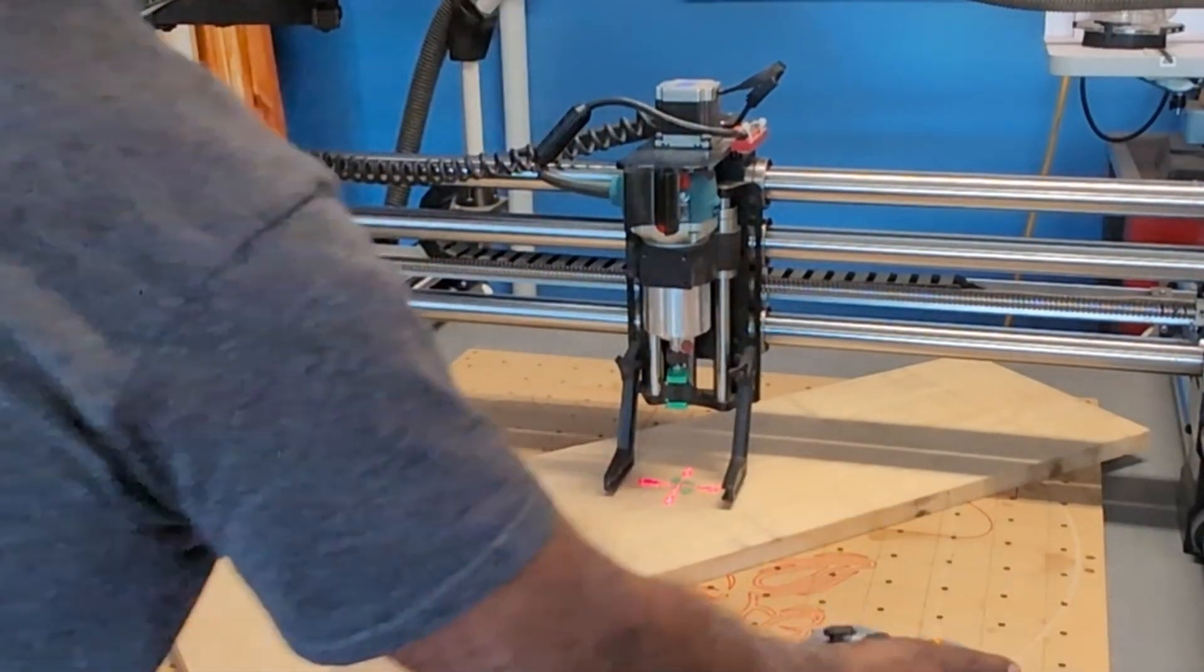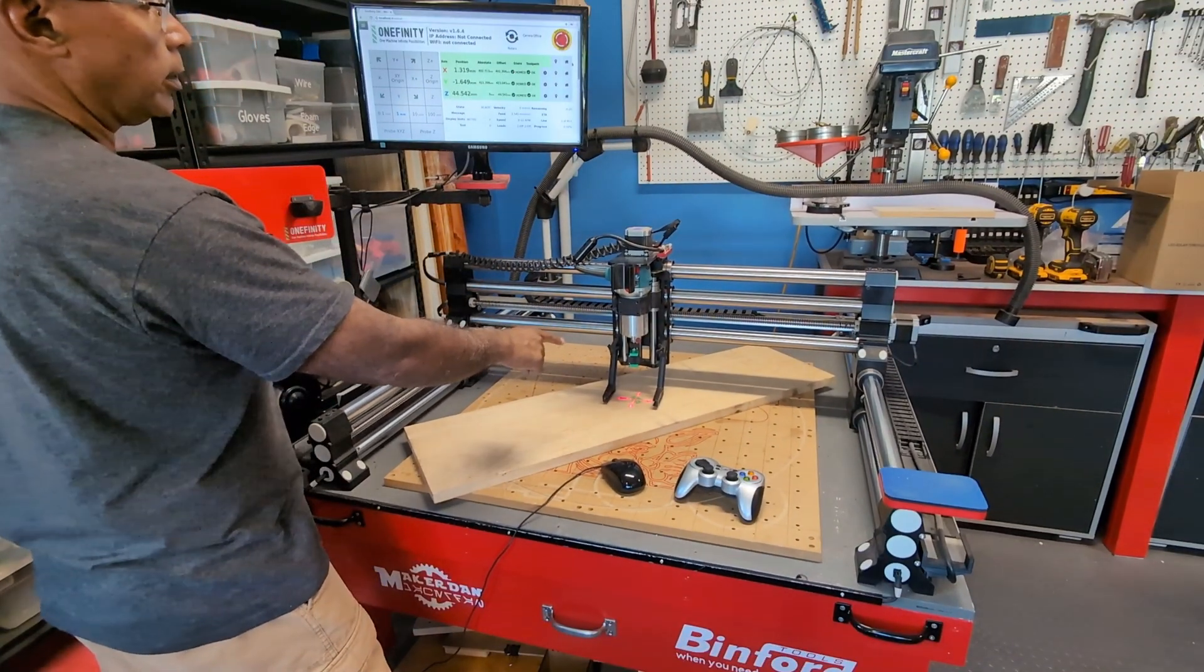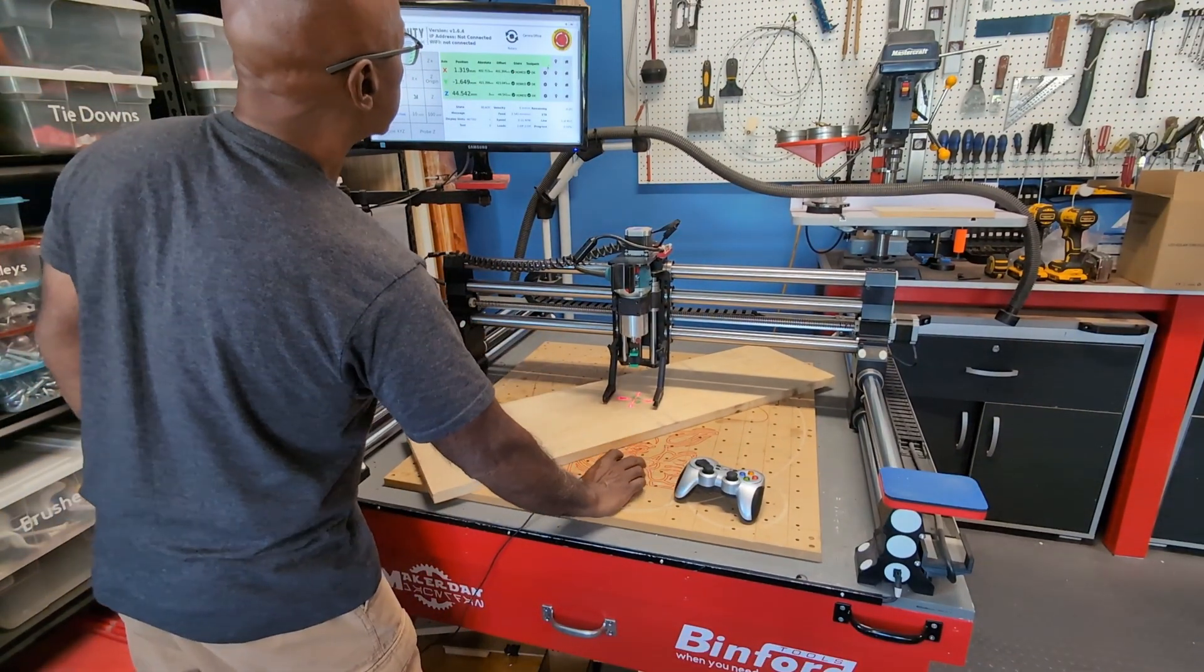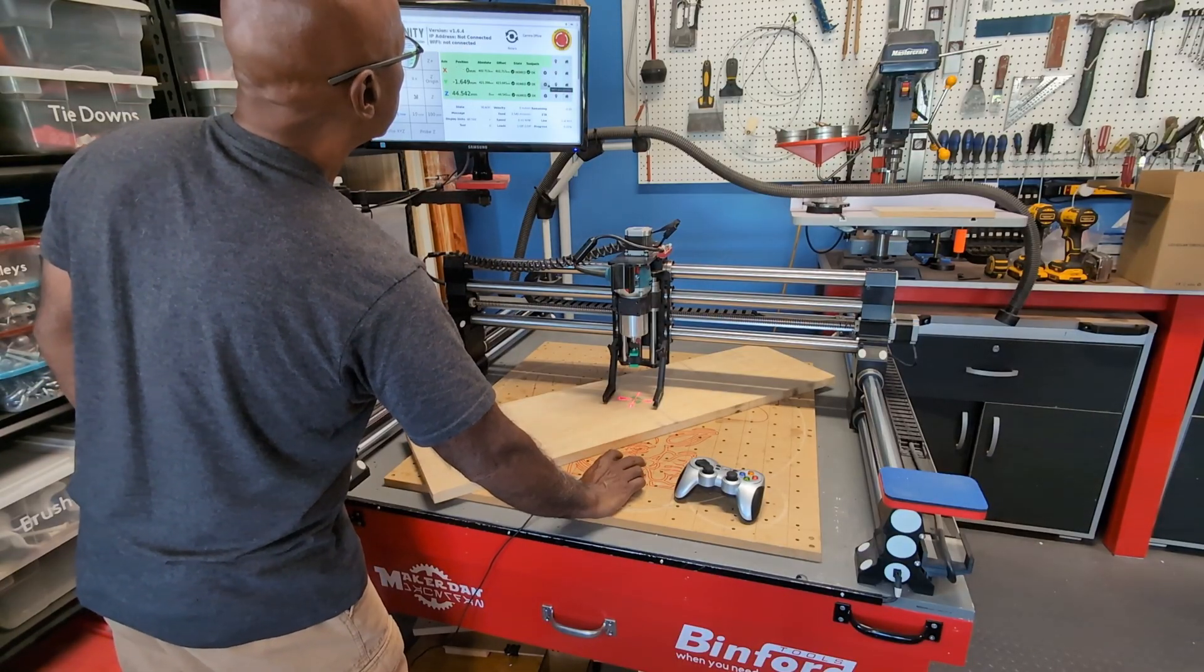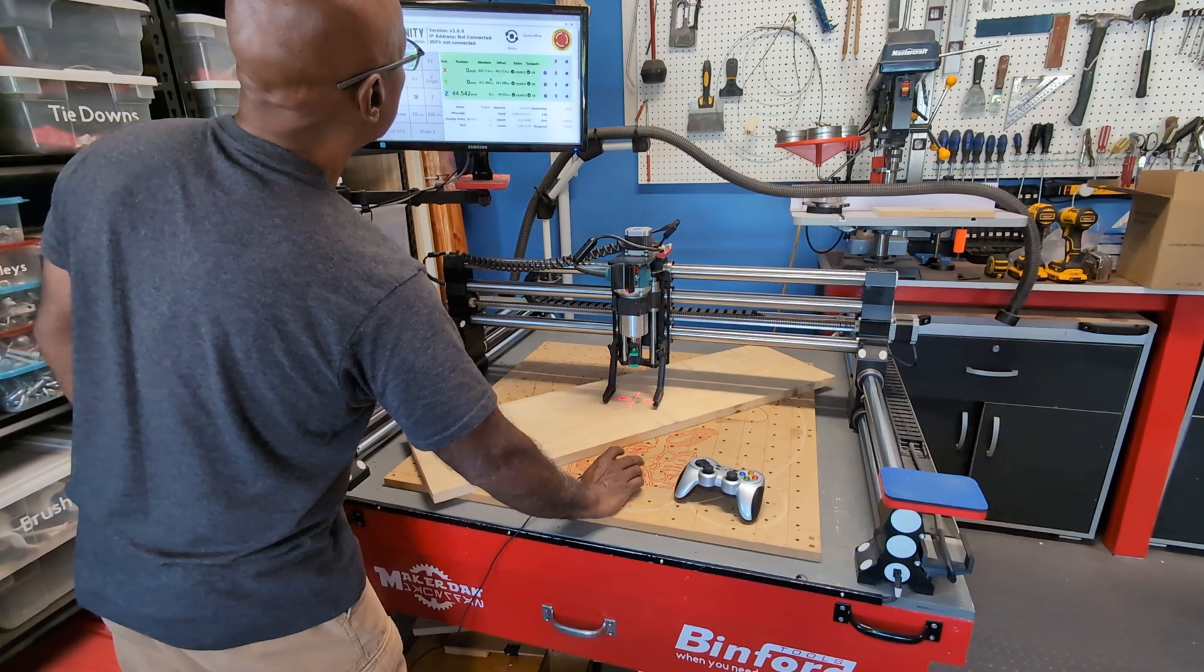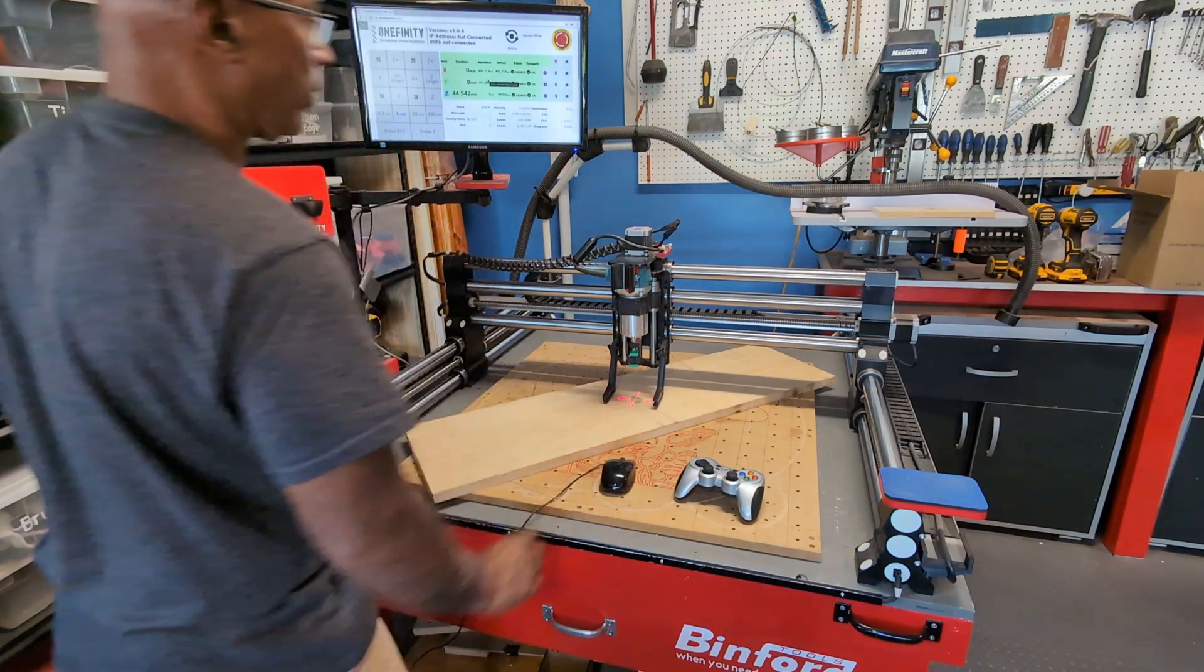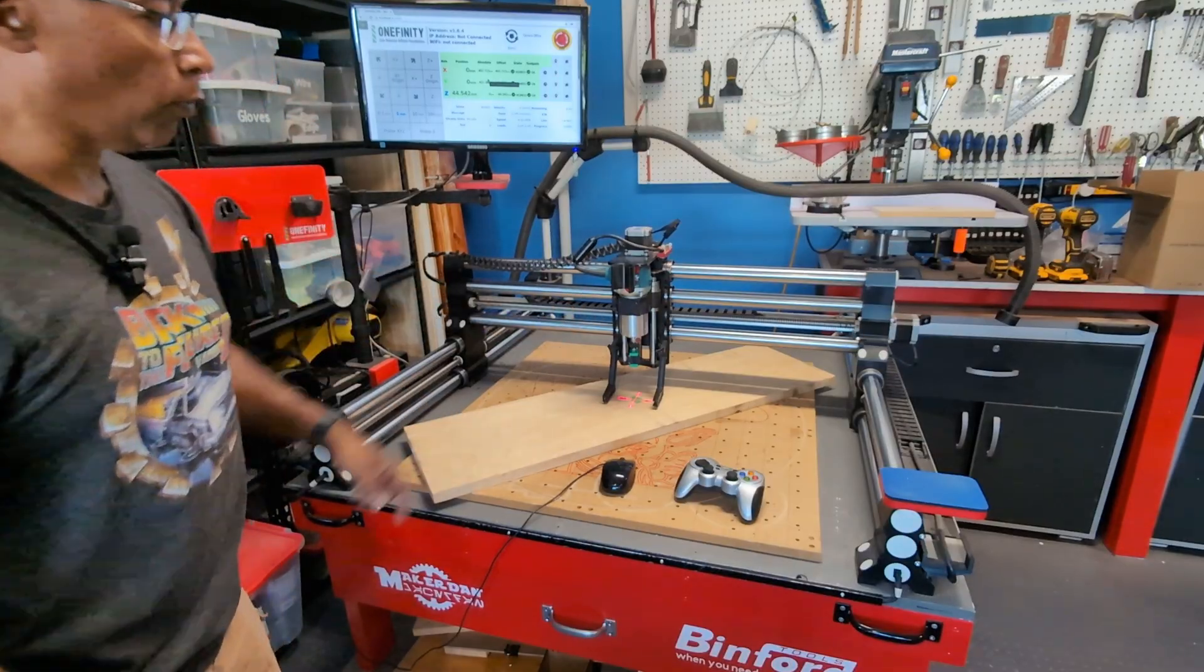Now I want to tell the CNC that this is now going to be zero position. So what I'm going to do is just say X, set that as zero. Y, set that as zero. And now we are ready to go, making sure that everything will stay on the board.